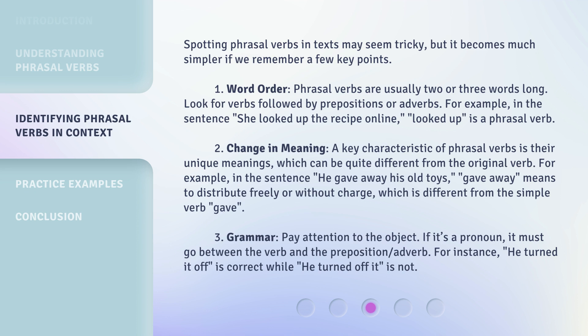Number three: grammar. Pay attention to the object. If it's a pronoun, it must go between the verb and the preposition or adverb. For instance, 'he turned it off' is correct, while 'he turned off it' is not.